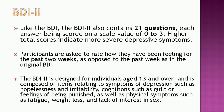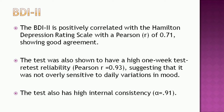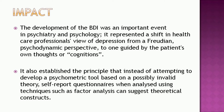The BDI-2 is designed for individuals aged 13 and over and is composed of items relating to symptoms of depression such as hopelessness and irritability, cognitions such as guilt or feelings of being punished, as well as physical symptoms such as fatigue, weight loss, and lack of interest in sex. The BDI-2 is positively correlated with the Hamilton Depression Rating Scale with a Pearson correlation of 0.71, showing good agreement. The test also has high one-week test-retest reliability with a Pearson correlation of 0.93, and high internal consistency with alpha equal to 0.91.